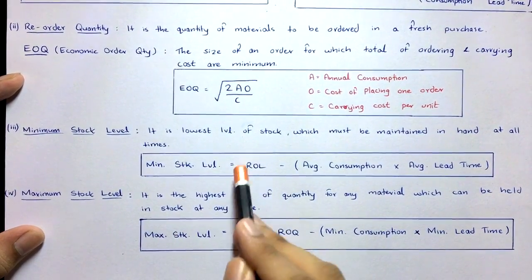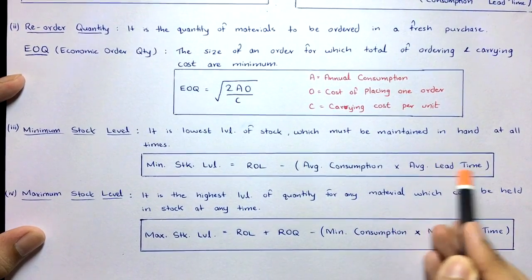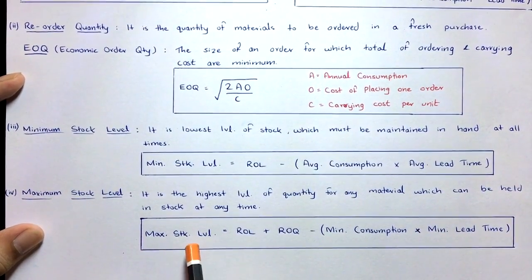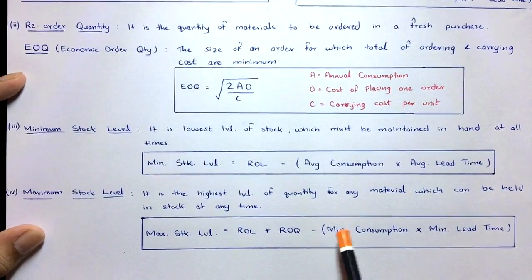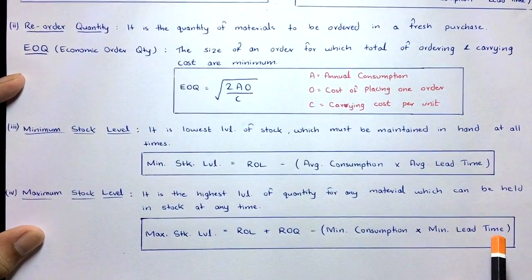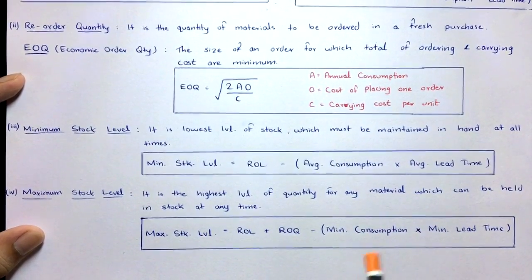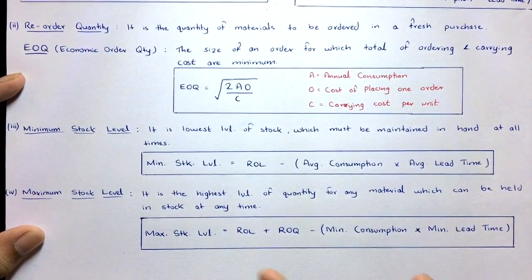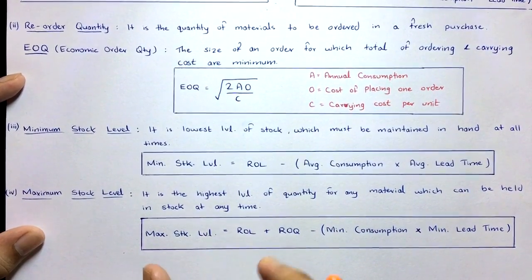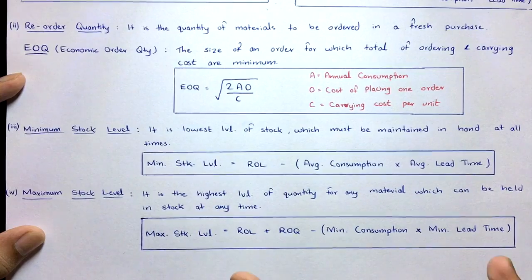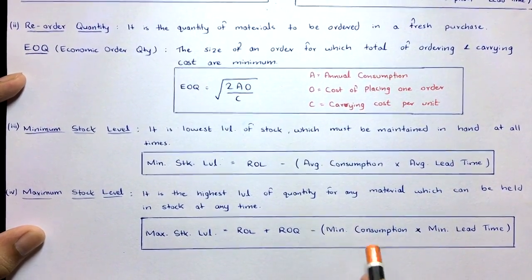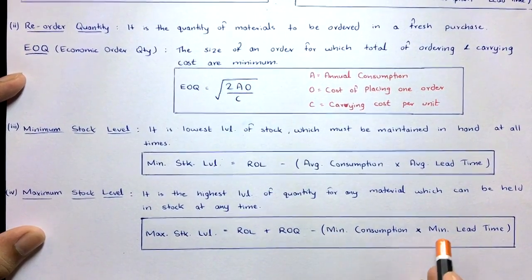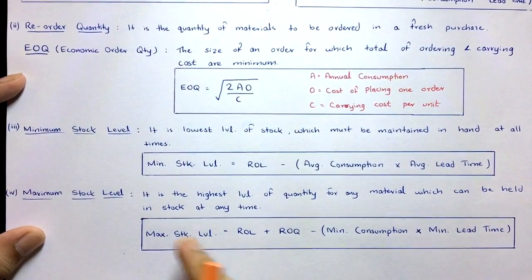Minimum stock level = Reorder level − (Average consumption × Average lead time). Maximum stock level = Reorder level + Reorder quantity (ROQ) − (Minimum consumption × Minimum lead time). Many students get confused between these two formulas, so here's a technique: the maximum stock level formula is 'bigger' — it includes the extra element ROQ — and uses minimum consumption × minimum lead time (the opposite of maximum).